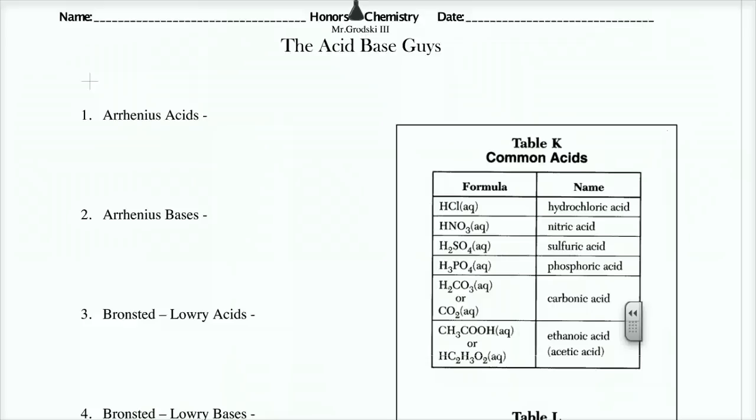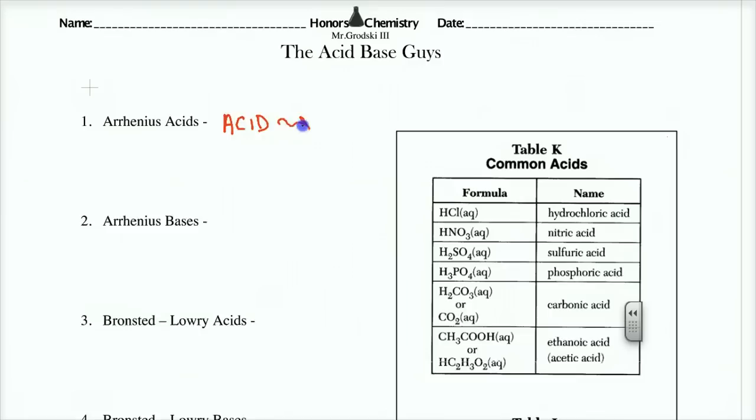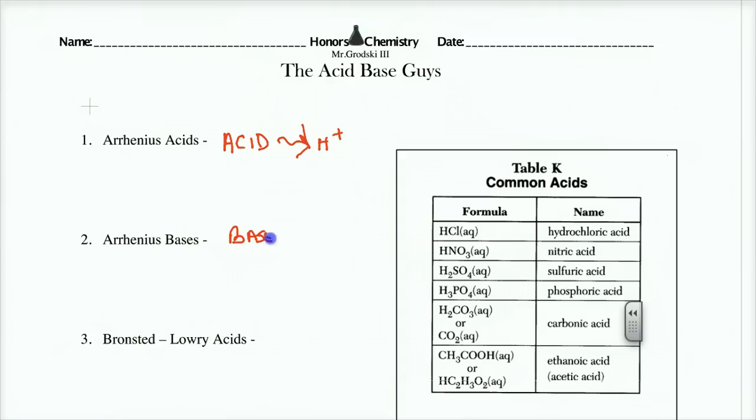Arrhenius acid was the easiest definition of the acids because he just said that if I've got some kind of acid, it's going to produce H+ in solution. If I have some kind of base, it must be a chemical that has a hydroxide in it because it's got to produce hydroxides. So Arrhenius acids produce protons in solution, and Arrhenius bases produce hydroxides.